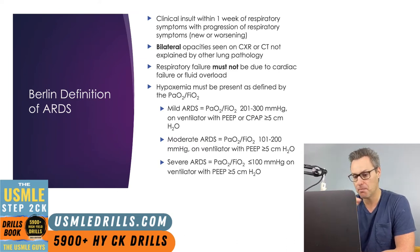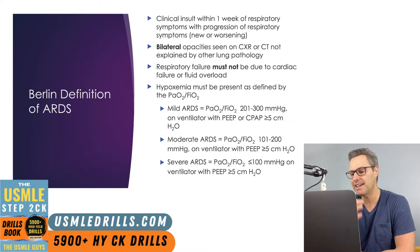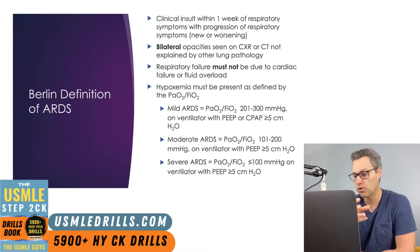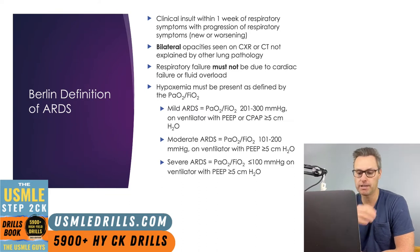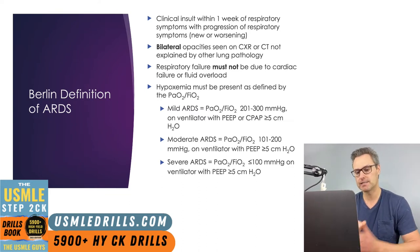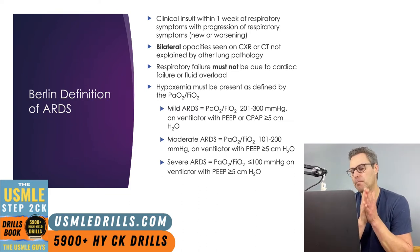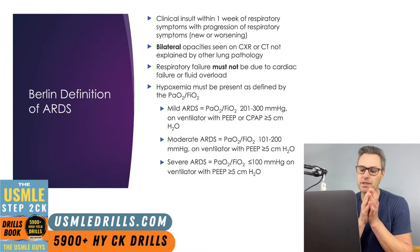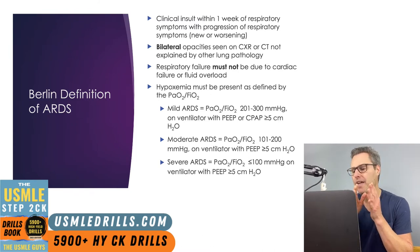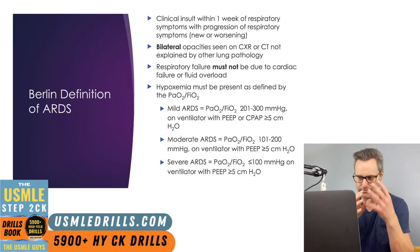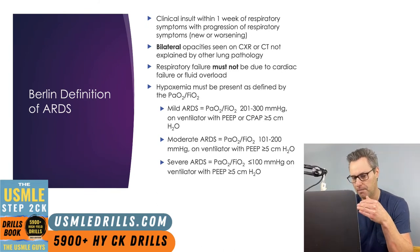Finally, there must be hypoxia, and depending on the PaO2 to FiO2 ratio, the patient will be categorized as having mild, moderate, or severe ARDS. To have ARDS, the patient must have a PaO2 to FiO2 ratio of less than 300, and they must have some kind of positive airway pressure, whether it's ventilation or CPAP.